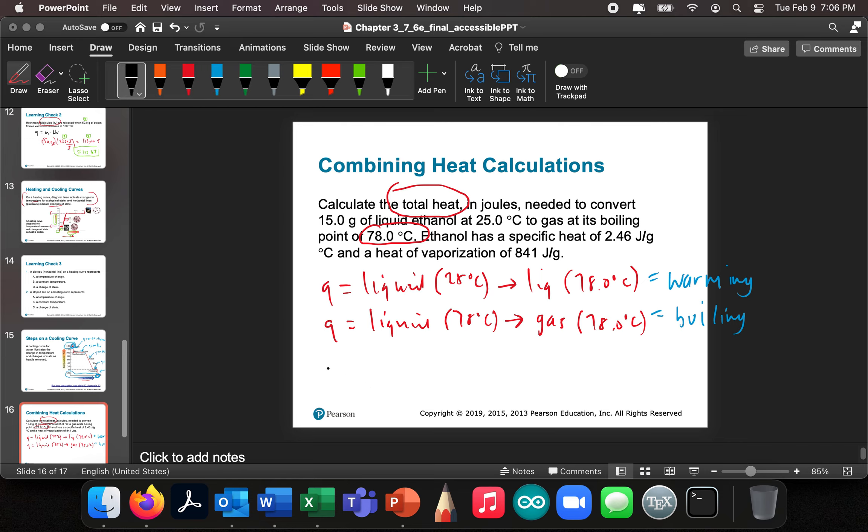So here's how it goes. Q of the first part is going to be M delta T times the specific heat of ethanol. That's the first part. And we're going to add to it, because we want to see how much heat is it going to take, how much in joules, we're going to add to that the mass times the heat of vaporization.